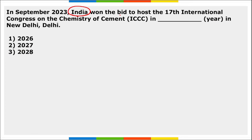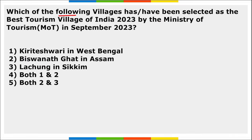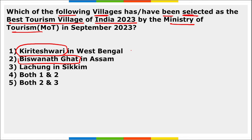In September, India won the bid to host the 17th International Congress on the Chemistry of Cement in the year 2027, to be held in New Delhi. Other bidders were Switzerland and UAE, but India won the bid. Regarding the best tourism villages of India 2023 selected by the Ministry of Tourism: two villages — Kriteshwari and Bishwanath Ghat — were selected. Kriteshwari is in West Bengal and Bishwanath Ghat is in Assam.